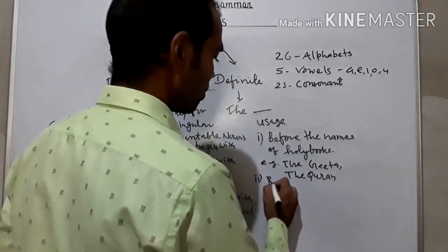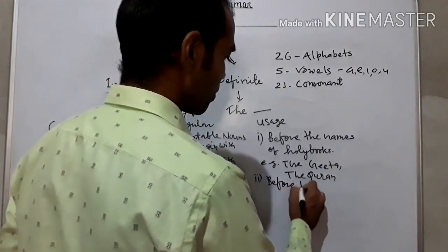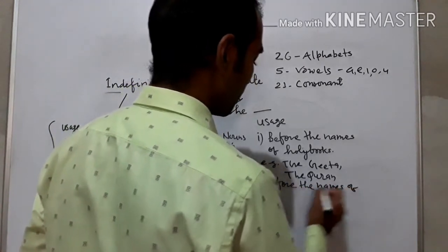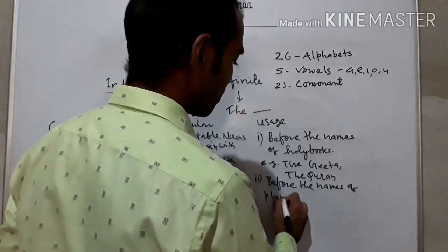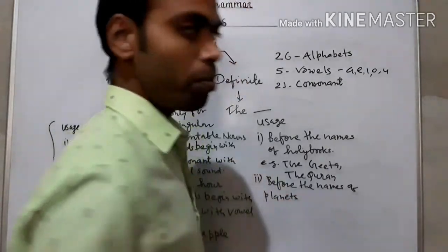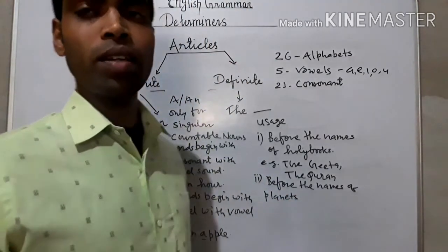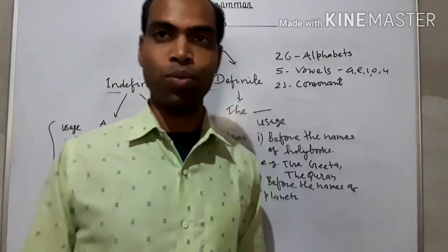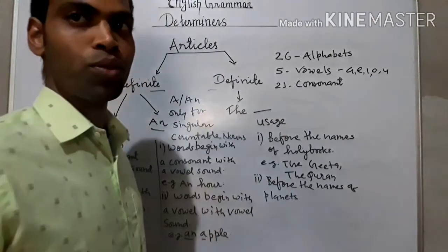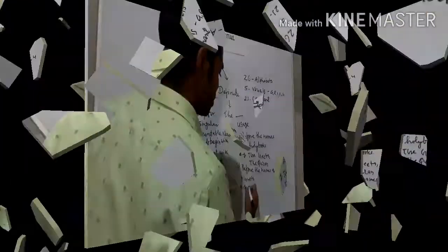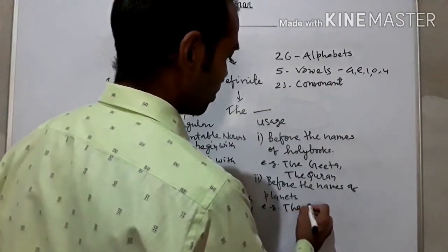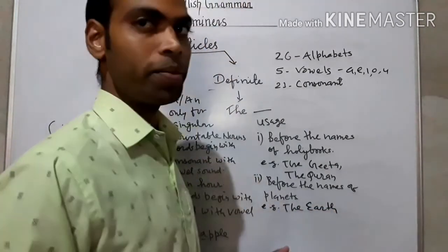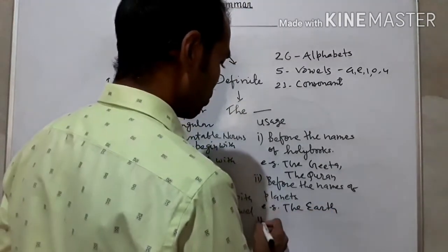Before the names of planets, we use THE. In the name of planets, generally THE is used. In the whole world, we use THE. Like the earth. You can understand it easily. Earth is a planet.